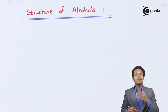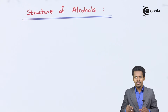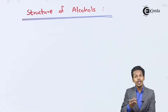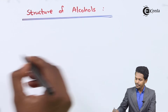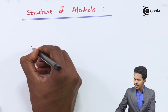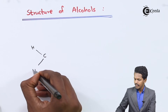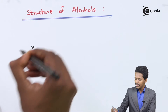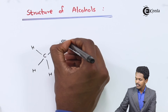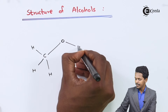The structure of alcohol is very much similar to that of the water molecule. Let me give you an illustration. For example, if I talk about Methanol — Methanol has basically three hydrogen atoms attached to the carbon atom, while the rest is oxygen and hydrogen as you could see.